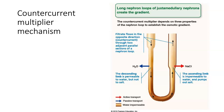We looked at reabsorption in the proximal convoluted tubule in a different video called reabsorption. In this video, what I'd like to do is look at reabsorption that occurs in the loop of Henle and also take a look at secretion and finish up talking about urine production.